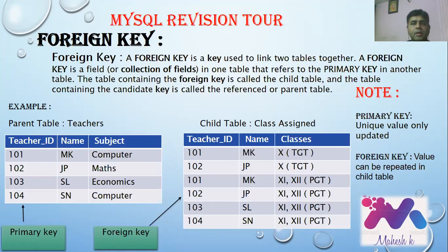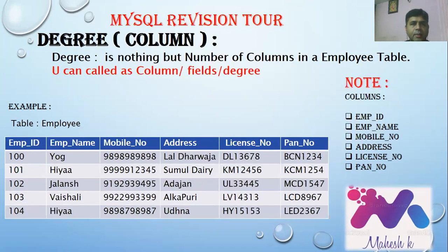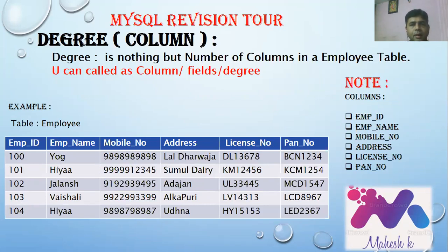Degree: degree is nothing but the number of columns in a table — also called fields. You simply count the number of columns in the given table. In the employee table, the columns are Employee ID, Employee Name, Mobile Number, Address, License Number, and PAN Number — so the degree is 6. They use the term 'degree' instead of directly saying 'columns.'